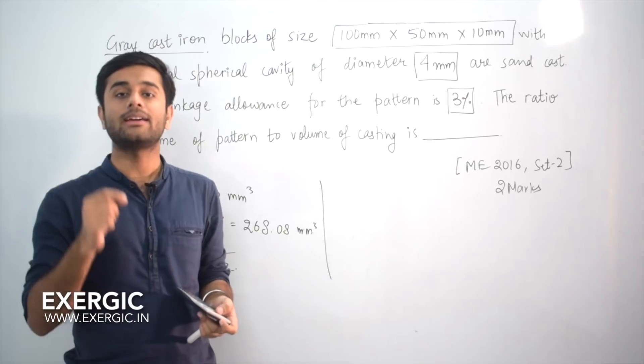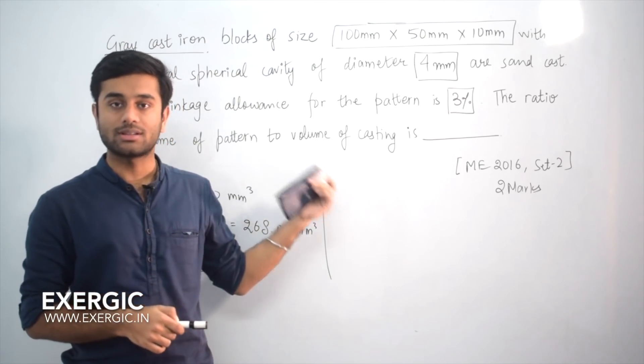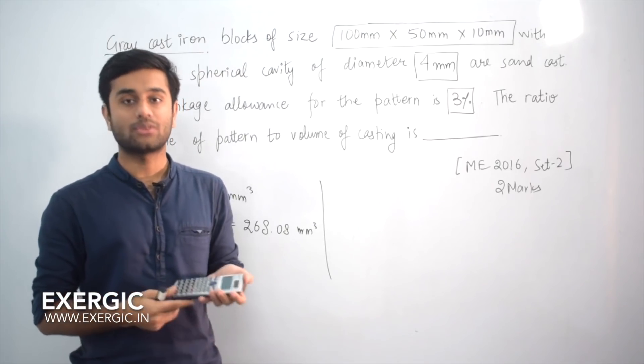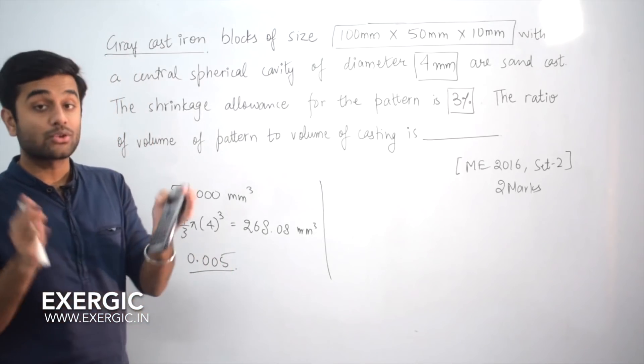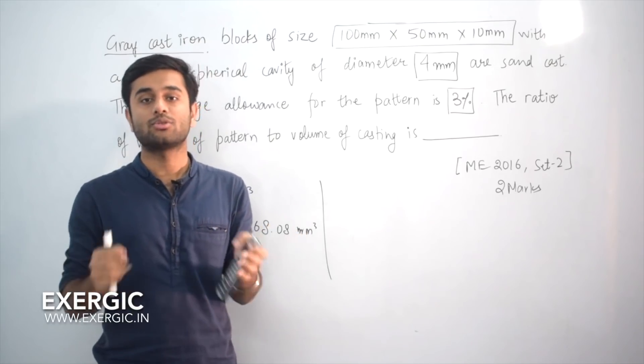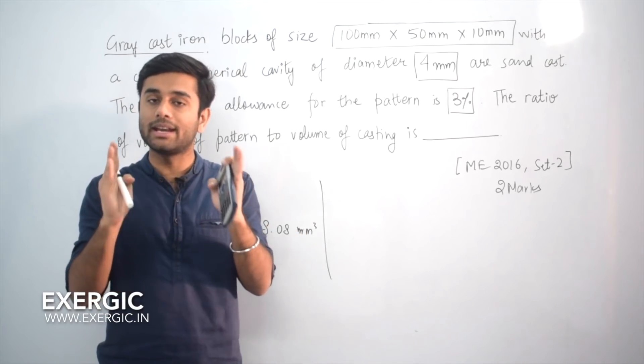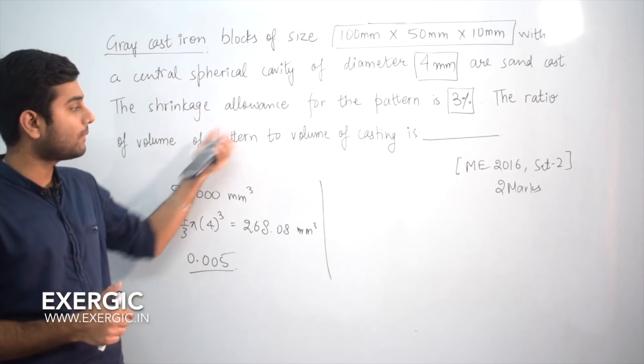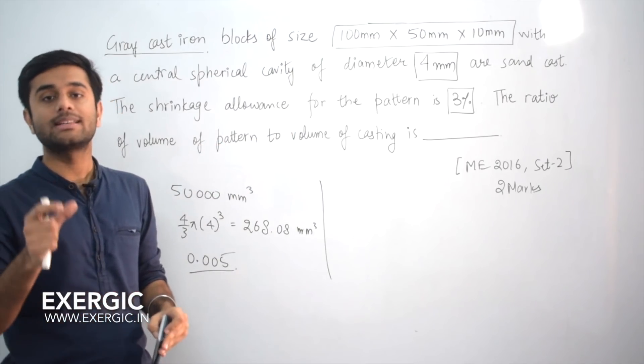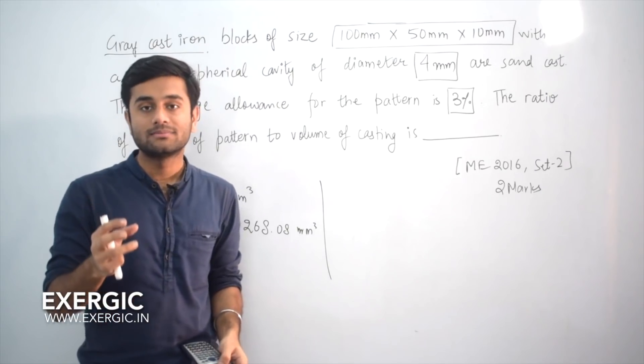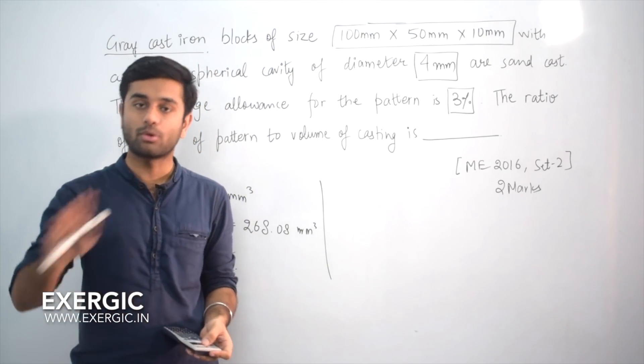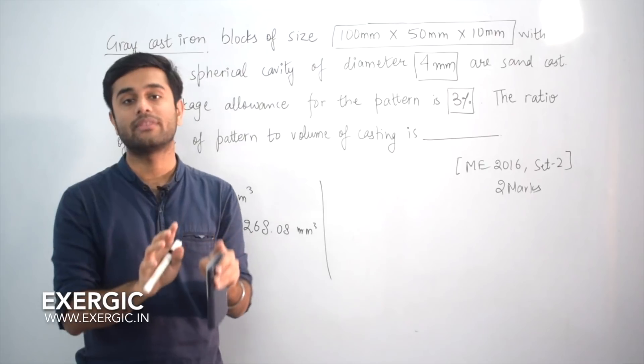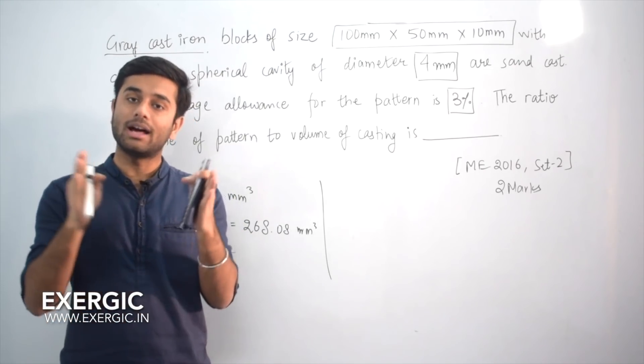But in GATE 2016, IISC conducted GATE and this question was asked. Obviously everyone followed the same notion that was popular and they thought that since after solidification, in the solid region, it expands, so pattern is made smaller so that after expanding it reaches the accurate size. Hence, if pattern is made smaller, this ratio will come out to be less than 1, because it is asking volume of pattern to volume of casting. But IISC gave the answer as greater than 1 and this notion which was running through all these years was broken. It does not happen. Grey cast iron does not expand upon solidification, means after getting solidified. The pattern is to be made larger only.